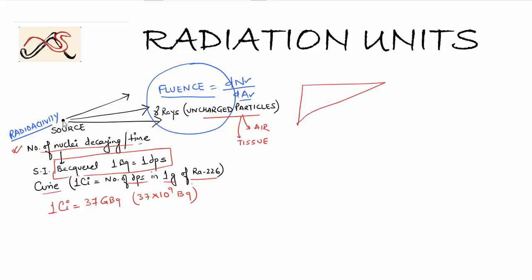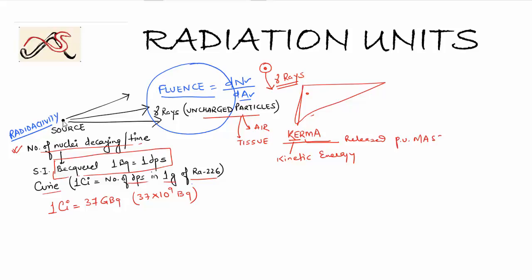Suppose a radiation source is emitting gamma rays. The first step was quantifying radioactivity; the second was quantifying fluence — how many particles are incident. The third point is that when these gamma rays enter the liver or any tissue, they lead to ionization. The next quantity is called KERMA — Kinetic Energy Released per Unit Mass.